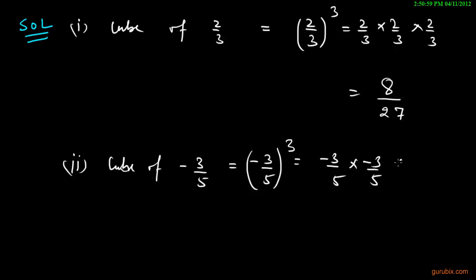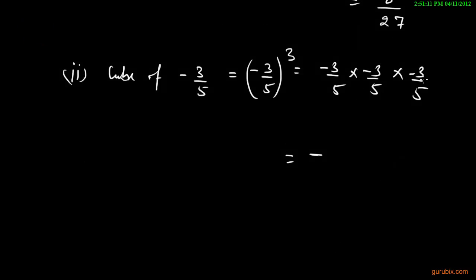And we know that the cube of a negative number is negative. And if we multiply 3 into 3 into 3 we get 27, and if we multiply 5 into 5 into 5 then we get 125. So this is the cube of minus 3 over 5. Thank you.